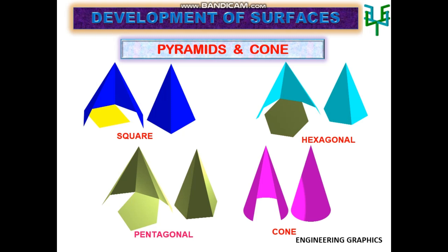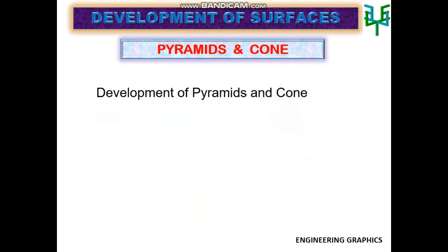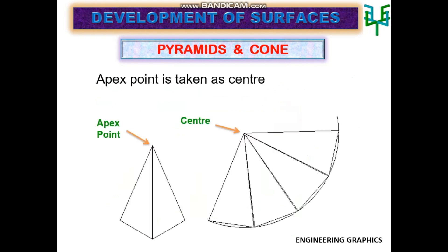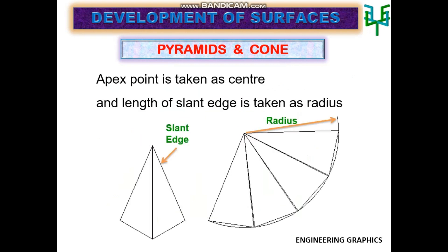This video explains the development of pyramids and cone. A pyramid has triangular faces around it. Development of pyramids and cone are drawn by the radial line method. The apex point is taken as center, and the length of the slant edge is taken as radius.